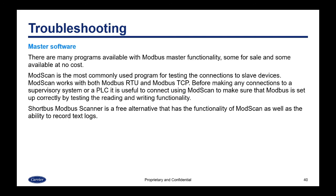Before making any connections to a supervisory system or a PLC, it is useful to connect using ModScan to make sure that Modbus is set up correctly on the device — that the address is correct, the baud rate is correct — and to test the read and write functionality. Shortbus Modbus Scanner is a free alternative that has the functionality of ModScan as well as the ability to record text logs.